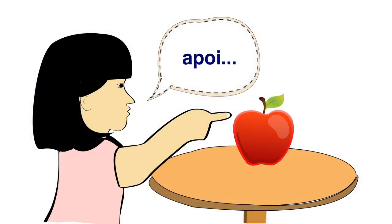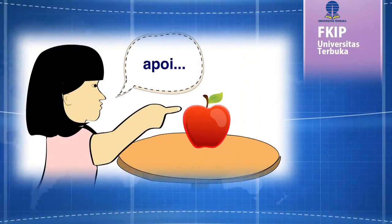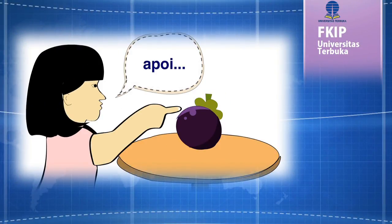Selain itu, seorang balita yang pertama kali diperkenalkan dengan buah, seperti contohnya buah apel, akan menyebut apel dengan 'apoi'. Demikian juga akan menyebut 'apoi' pada buah jeruk, limau, pir, mangga, dan buah-buahan lain yang memiliki bentuk dan ukuran sejenis.